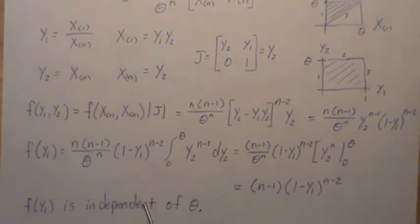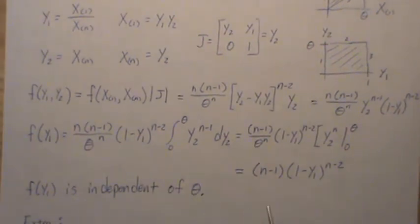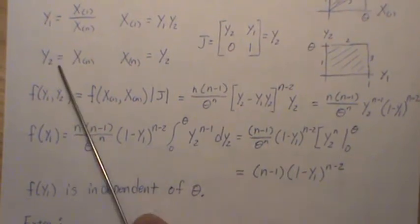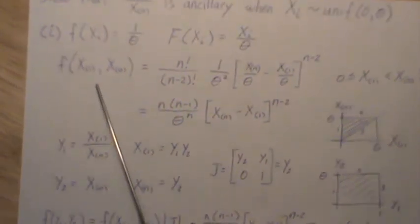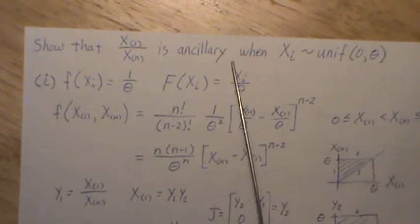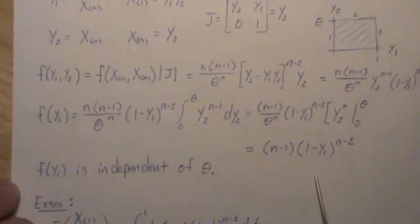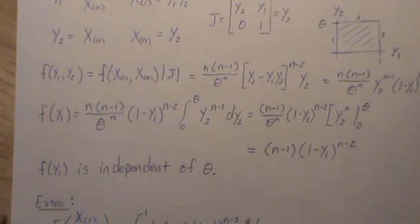Now, notice that f of Y1 is independent of theta. Right? Y1 was this. And that's what we wanted to show, that it's ancillary. Right? There's no theta in here. So that is an ancillary statistic.